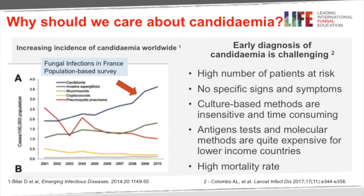Why should we care about candidemia? There is an increasing rate of candidemia in tertiary care hospitals around the world. This population-based study conducted in France used the full French population as denominator, and you can see that from 2001 to 2010 there was a rising incidence of candidemia, related to the high number of patients at risk. There are no specific signs and symptoms of candidemia — it's commonly misinterpreted as sepsis, or refractory sepsis caused by multi-resistant bacteria. Clinicians start broadening the spectrum of antibiotics instead of using appropriate antifungal therapy, which increases the possibility of death in critically ill patients.